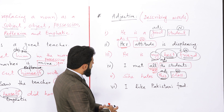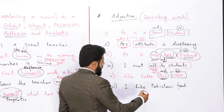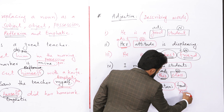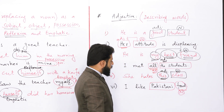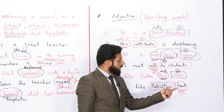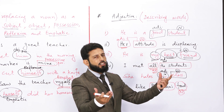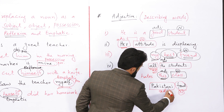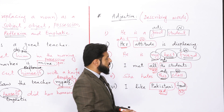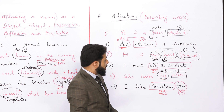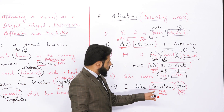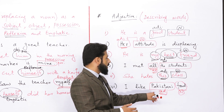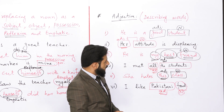'I like Pakistani food'۔ 'Food' noun ہے۔ مجھے food پسند ہے لیکن کونسا food؟ Pakistani food۔ جب آپ کوئی adjective proper noun سے بناتے ہیں تو اس adjective کو proper adjective کہتے ہیں۔ یہ بن گیا proper adjective۔